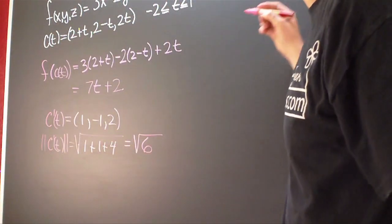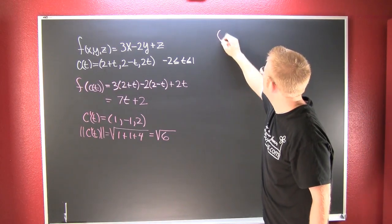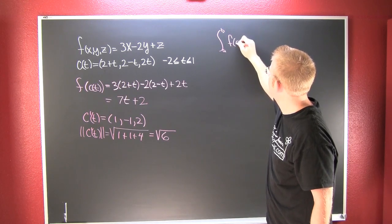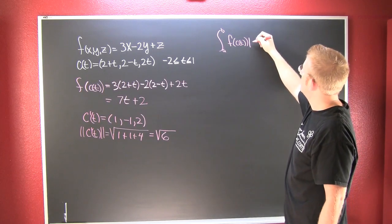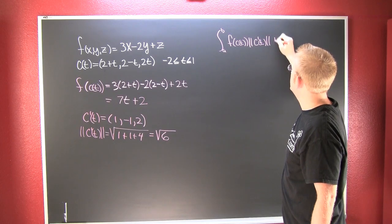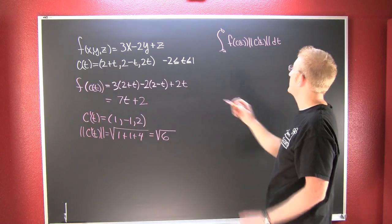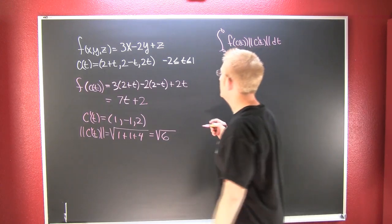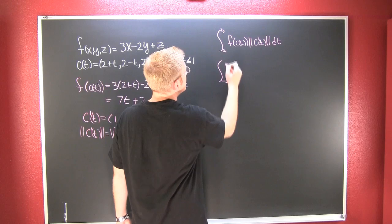Alright, so now I can put it in my scalar form. In my scalar form, I'm looking for the integral from A to B of F of C of T times the magnitude of C' of T DT. So this is my function evaluated along my path, and I'm going to multiply it by the differential of arc length. So here I see my limits. Those are going from minus 2 to 1.